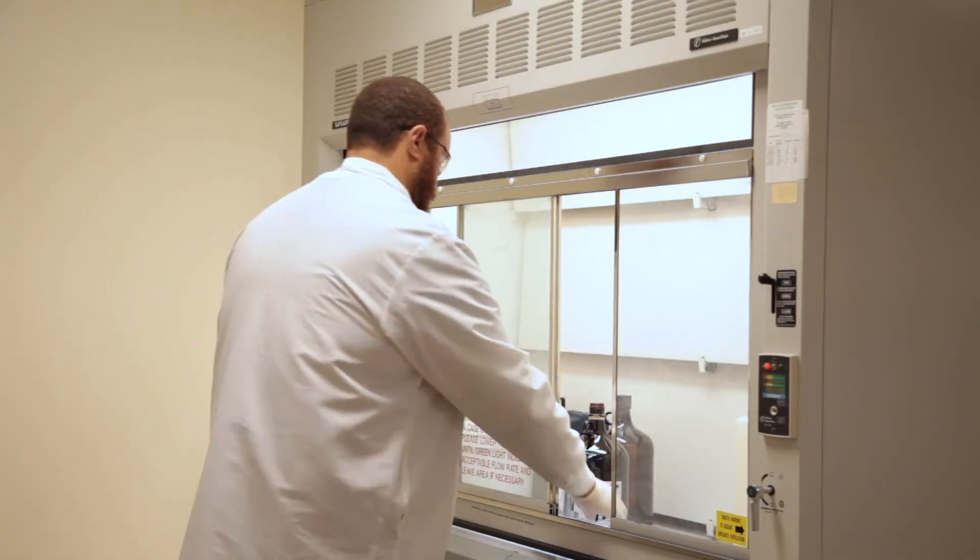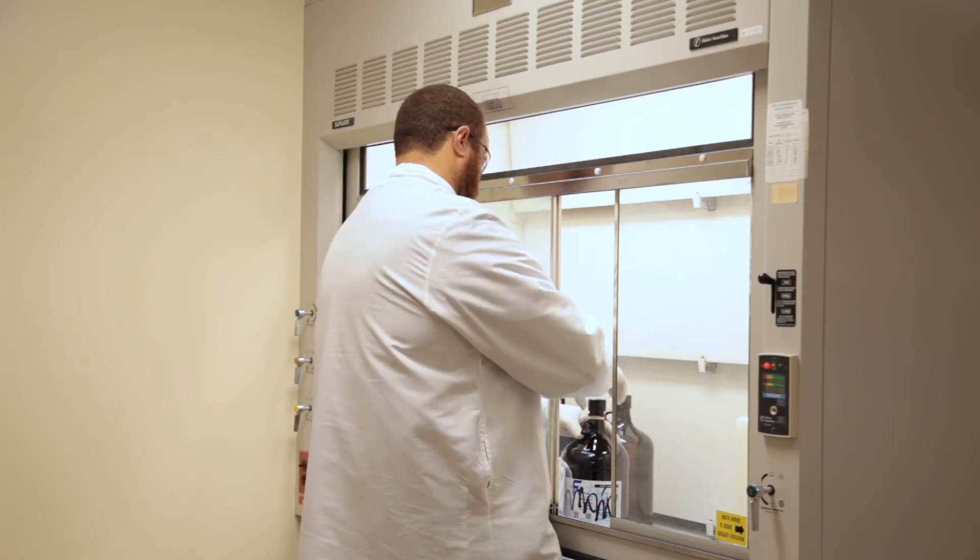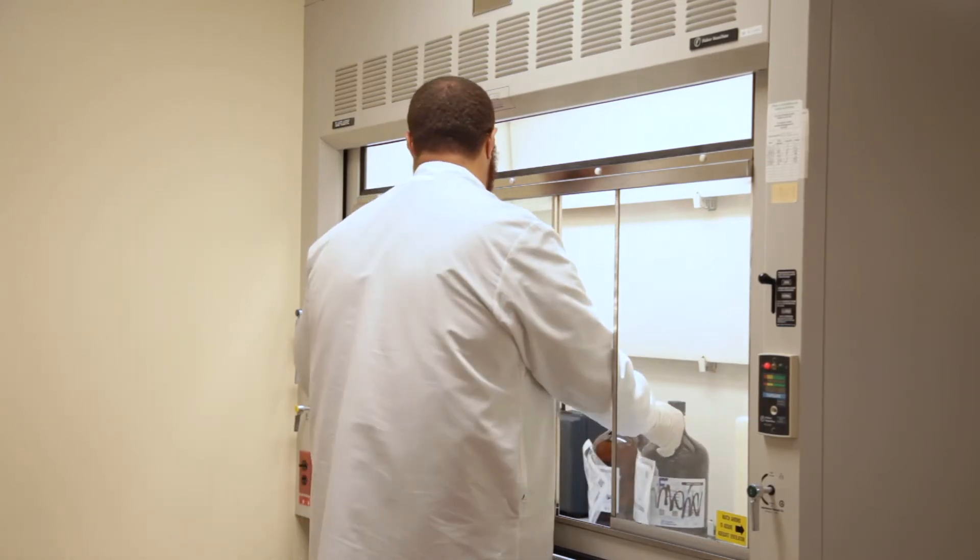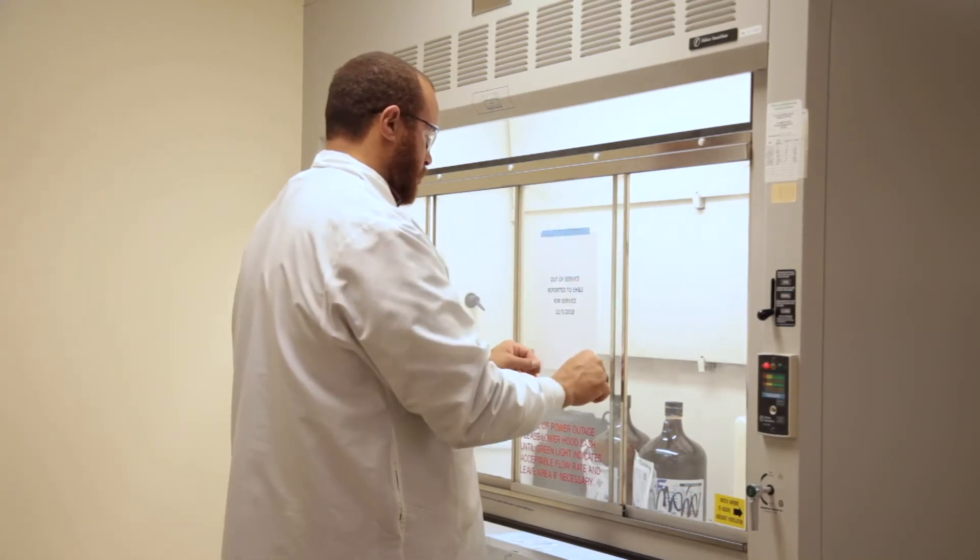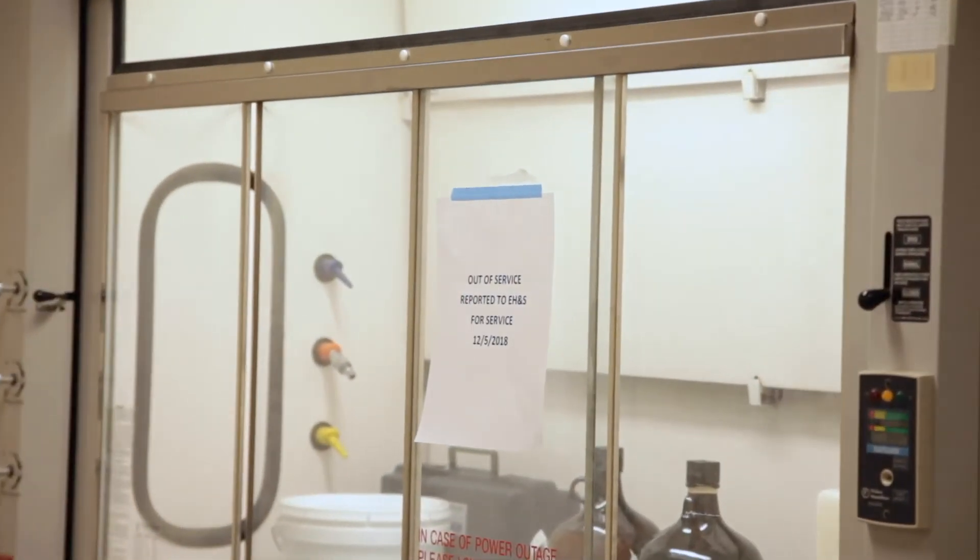If you notice a fume hood is not functioning properly, stop using the hood, close all the containers, close the sash, put a Do Not Use sign on the fume hood, and submit a work order to Facilities Management for repair.